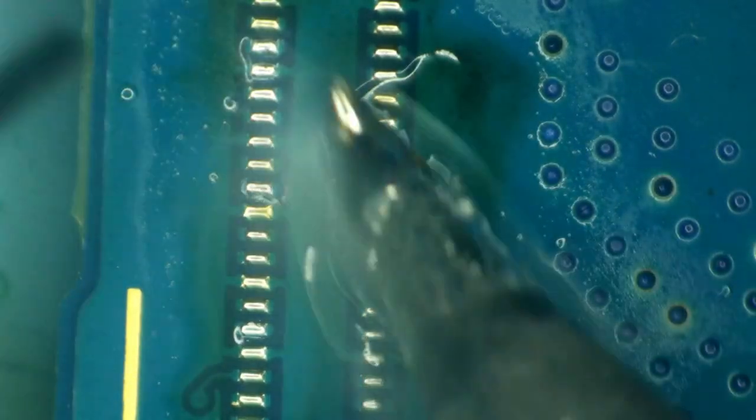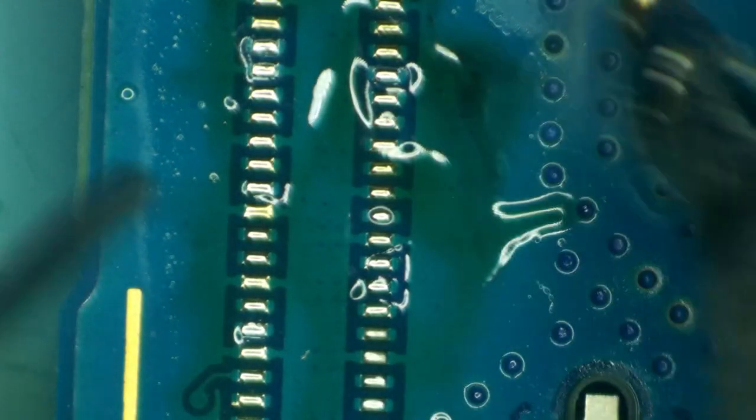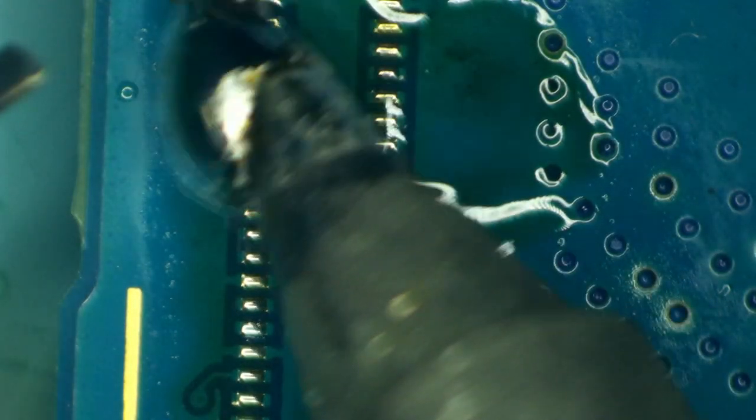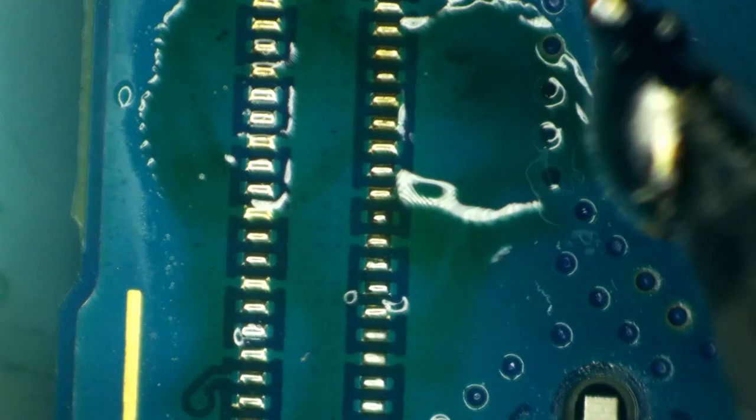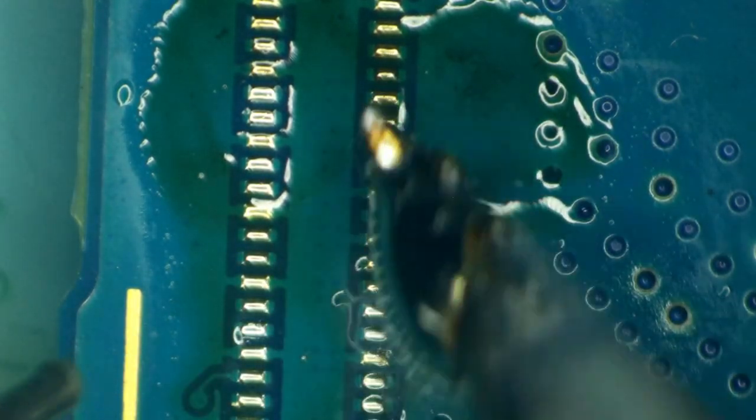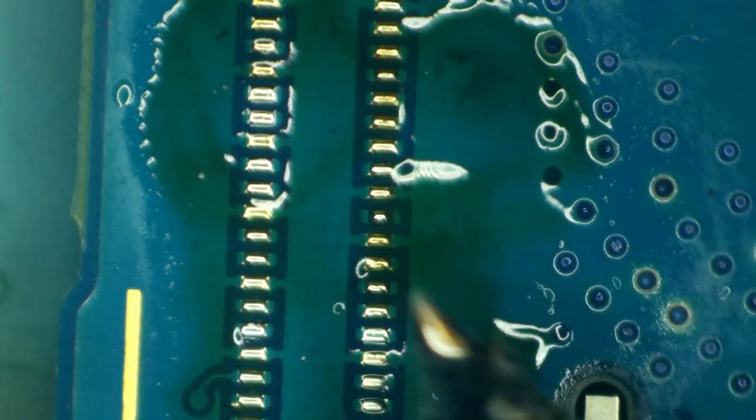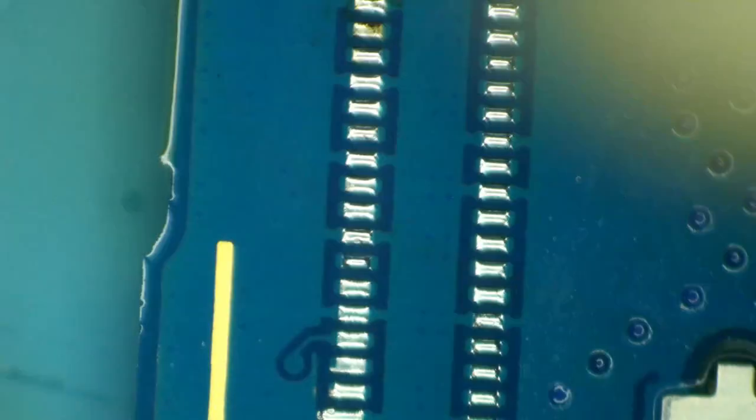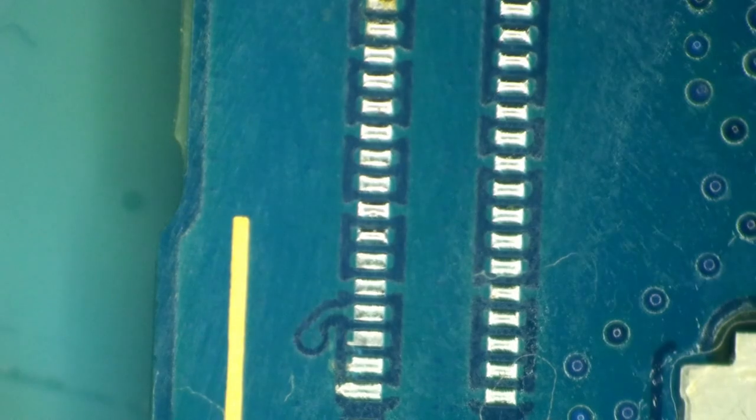I'm just going to keep on fluffing this up till I'm comfortable it has enough solder on there. I'm really just trying to get as much as possible on there while having it keep a nice uniform dome shape. Now I'm going to clean this up with some isopropyl alcohol. I'm just going to keep these pads tinned like this.